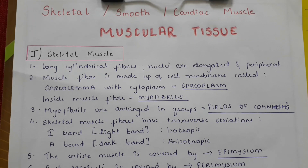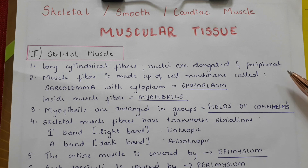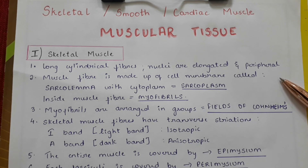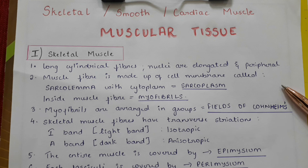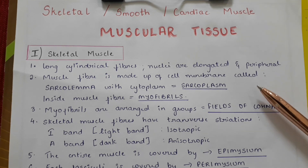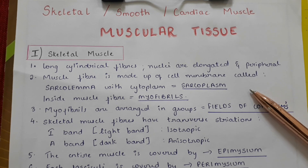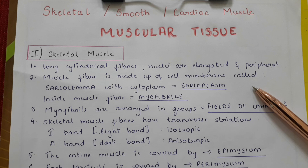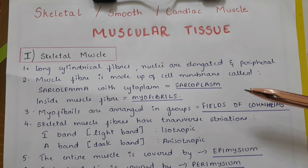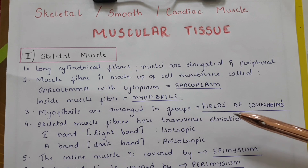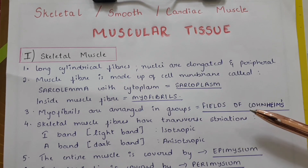Muscular tissue — the first type is skeletal muscle. Skeletal muscles are long cylindrical fibers wherein the nuclei are elongated and peripheral. The muscle fiber is made up of a cell membrane called the sarcolemma, with the cytoplasm called the sarcoplasm. Inside the muscle fiber are the myofibrils, which are arranged in groups called the fields of coniines.